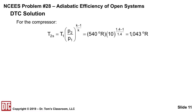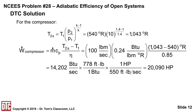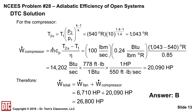For the compressor, we do the same calculation. It has the same inlet condition, T1 equals 540 degrees Rankine, but its pressure ratio is 10 to 1, so we end up with T2S equals 1,043 degrees Rankine. Putting that into the equation gives 14,202 BTUs per second; after unit conversion, that's a little over 20,000 horsepower. Adding the fan and compressor together gives 26,800 horsepower total, and that is answer B.